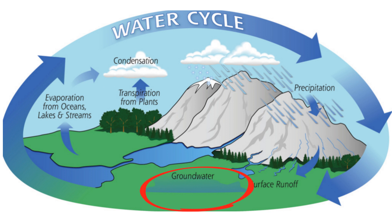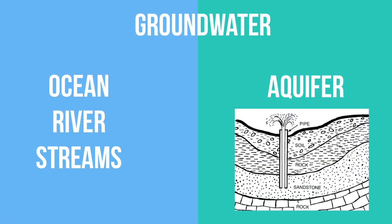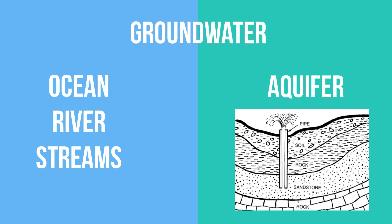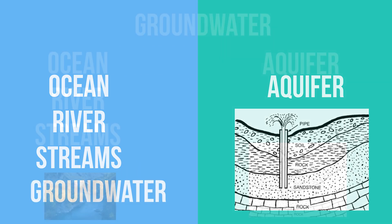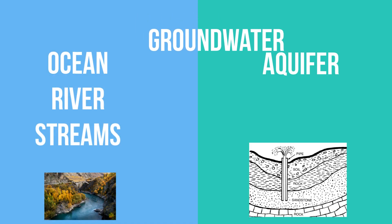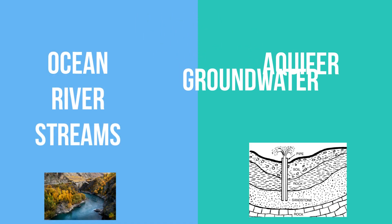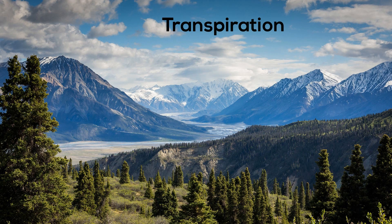The groundwater may take several different paths. The groundwater may seep its way into the oceans, rivers, or streams. Or it may go into an aquifer, which is a body of saturated rock through which water can easily move. Or it may be released back into the atmosphere through transpiration.